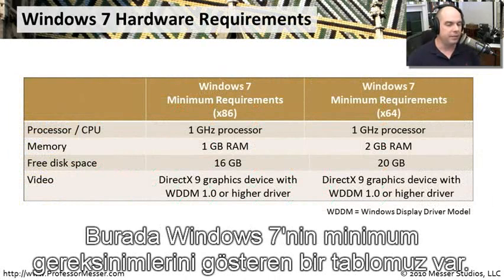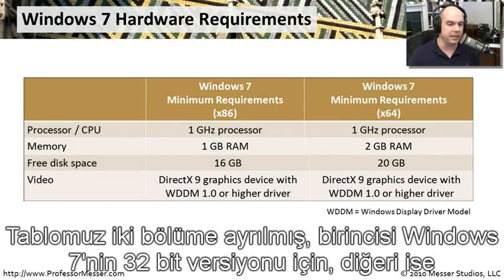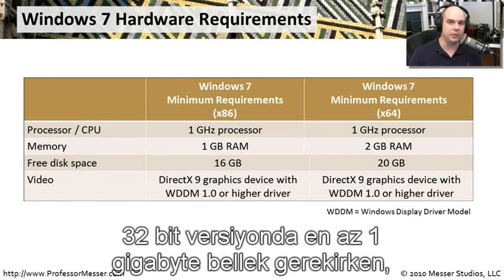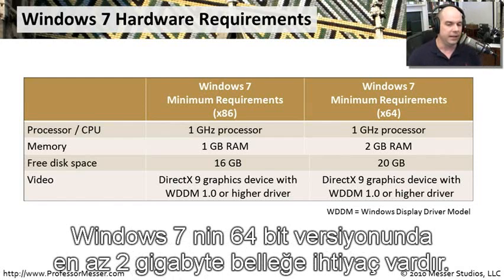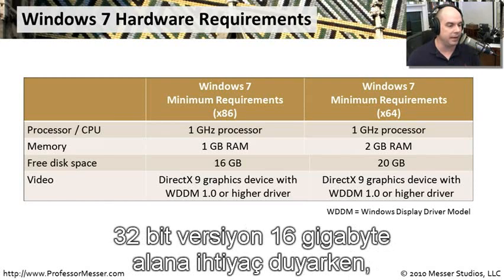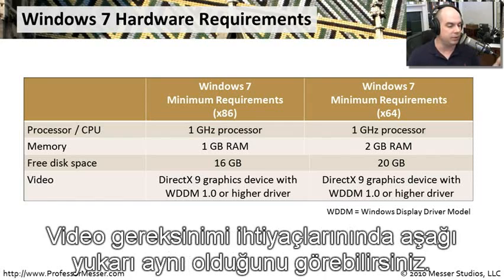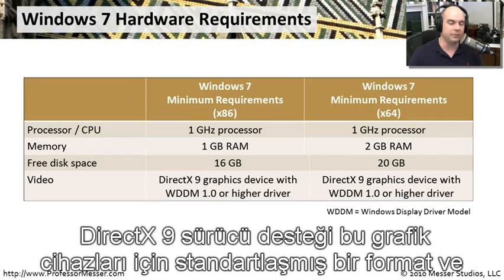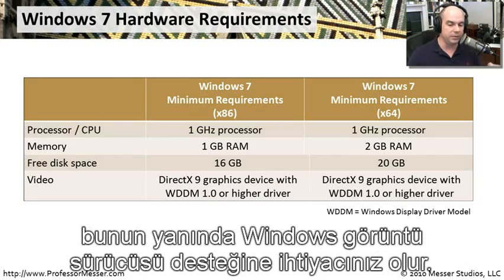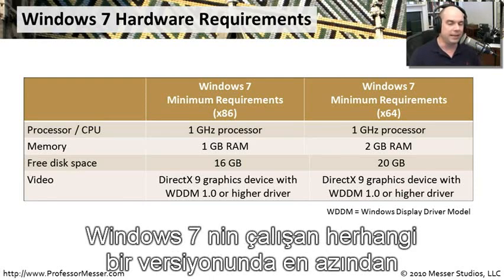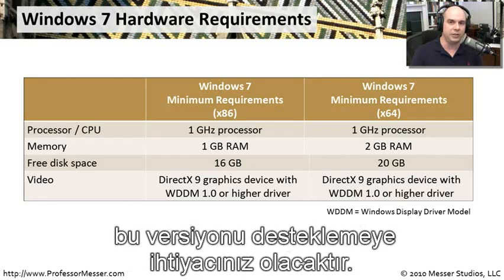Here are the minimum hardware requirements for Windows 7, broken into 32-bit and 64-bit sections. Both require a minimum 1 GHz processor. RAM differs: 1 GB minimum for 32-bit, 2 GB for 64-bit. Disk space is 16 GB free for 32-bit and 20 GB for 64-bit. Video requirements are the same for both: DirectX 9 graphics with a Windows Display Driver Model (WDDM) version 1.0 driver — the minimum needed to run any Windows 7 edition.